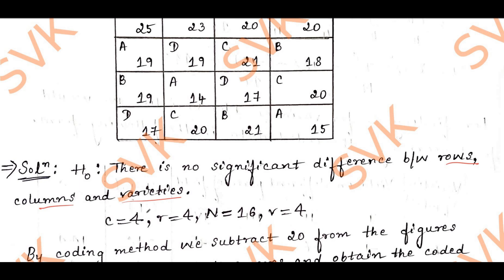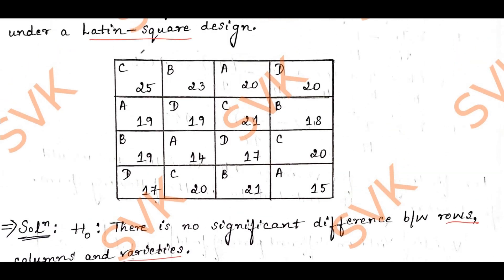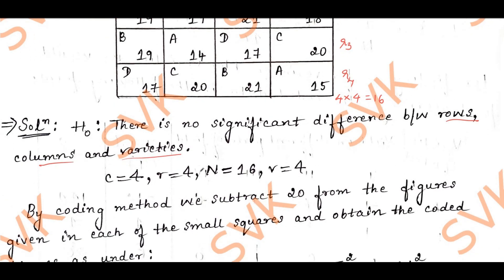First I am identifying the number of rows, columns, observations, and varieties. In the given tabulation we have column 1, column 2, column 3, column 4 — so 4 columns — and rows R1, R2, R3, R4 — so 4 rows. We have 4 varieties A, B, C, D, and since it is a 4×4 square matrix, the number of observations is 4×4 = 16. Therefore: number of columns = 4, number of rows = 4, number of observations = 16, number of varieties = 4.